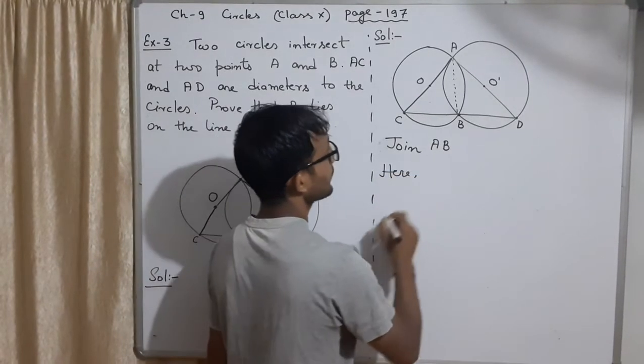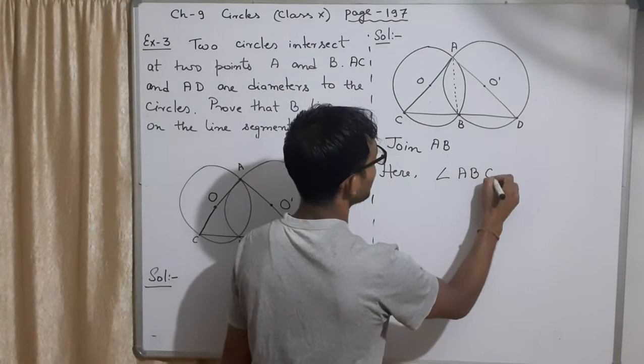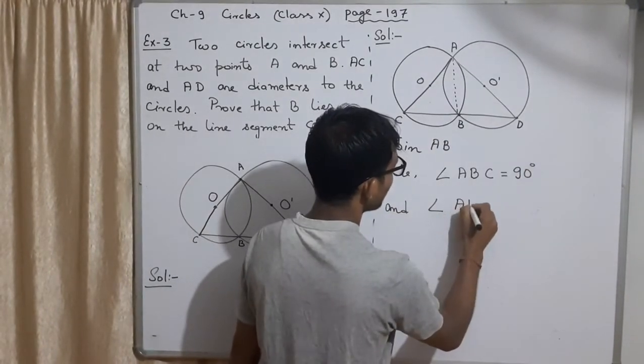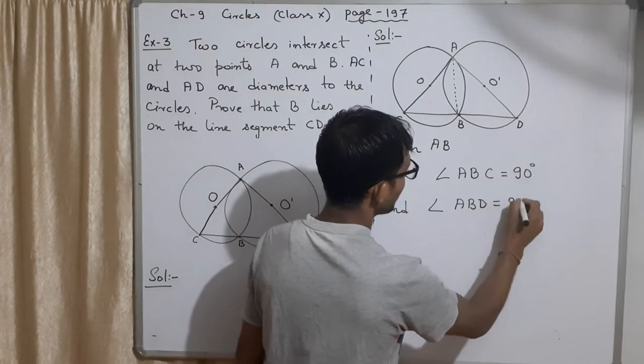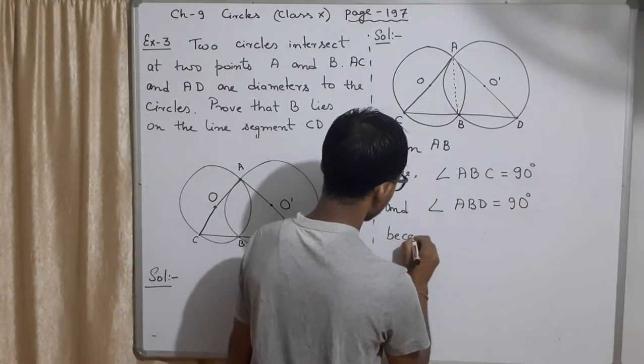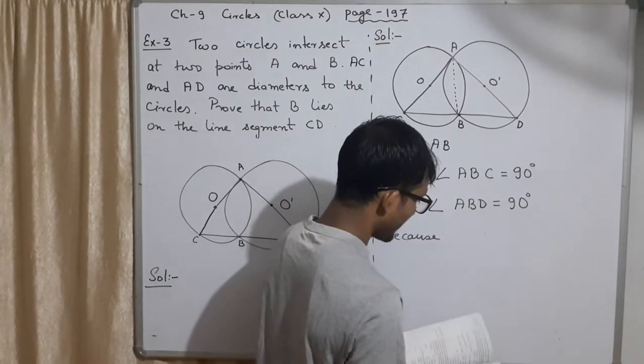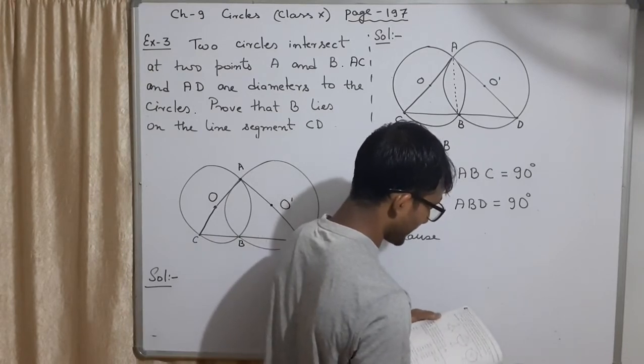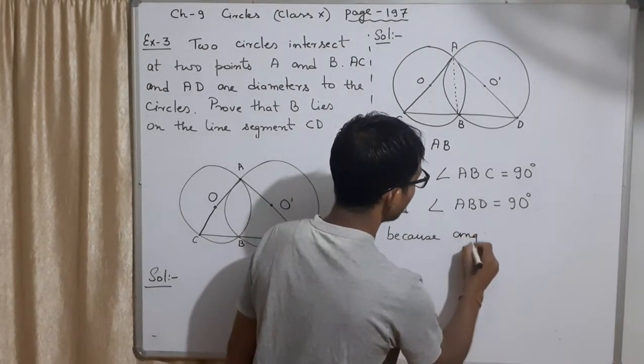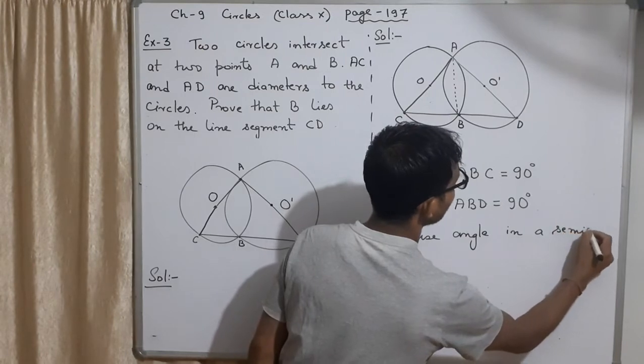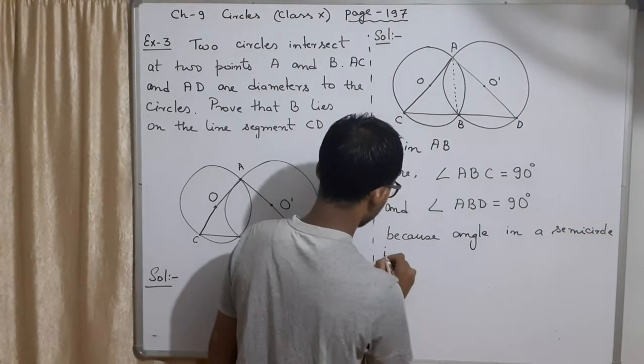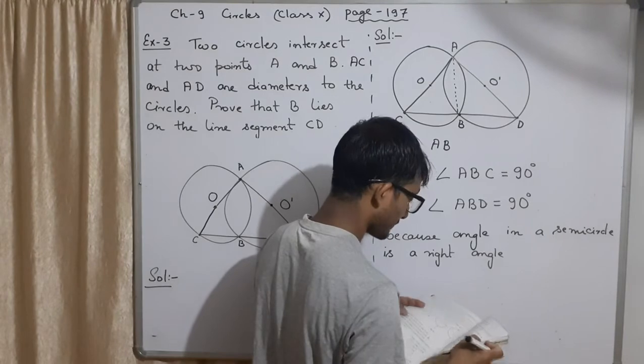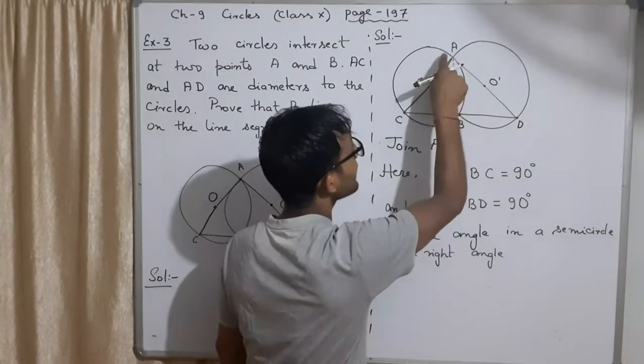Here what you do? Angle ABC is equal to 90 degree and angle ABD is also equal to 90 degree. What is the reason? Because, what is the reason? I'll write the angle in the same segment, this is 9.3. You have to write exactly the angle in a semicircle is a right angle. So this is angle in a semicircle. This is angle in this semicircle.